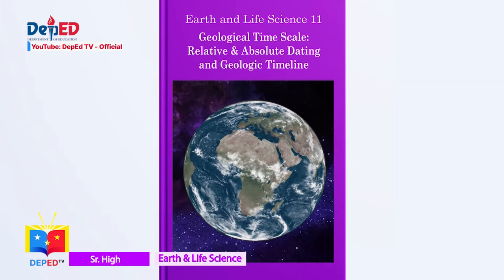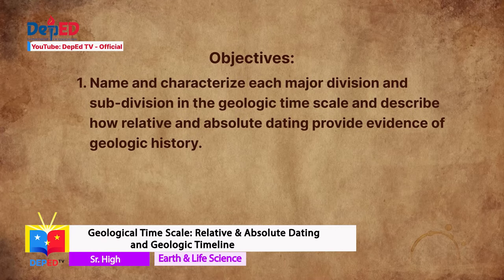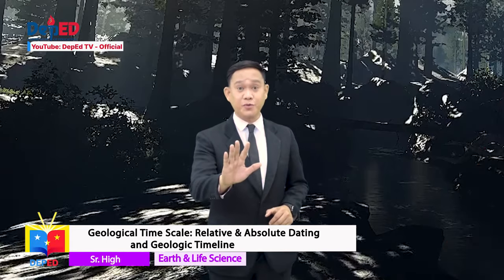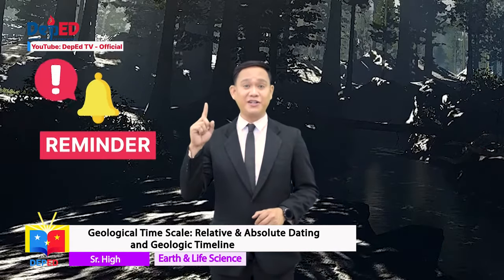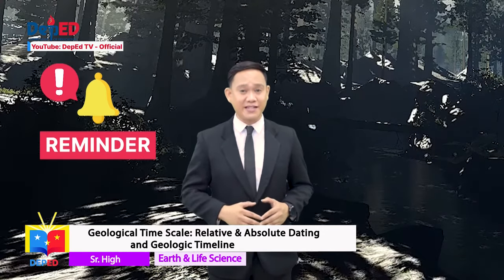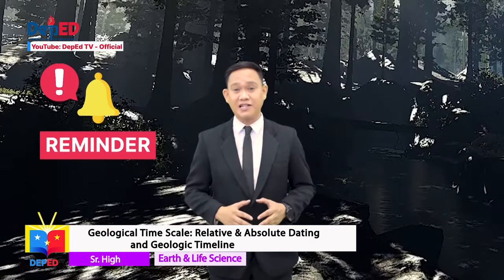For us to be guided in our lessons, here are our objectives. One: Name and characterize each major division and subdivision in the geologic time scale and describe how relative and absolute dating provide evidence of geologic history. Two: Define fossils and each type and determine how they are used to track geologic history. Before we proceed, here are our reminders: Check your prior knowledge of the lesson from your junior high school science subject. Listen and pay attention to the details. Bring with you your paper and pen for jotting down the important concepts.